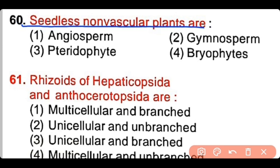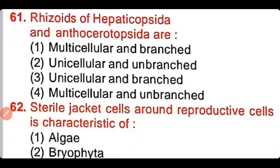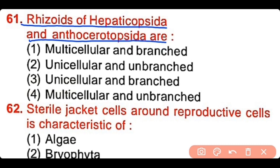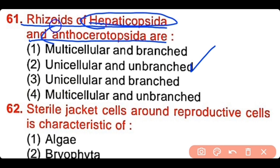Question number 60: The seedless nonvascular plants are angiosperms, gymnosperms, pteridophytes, or bryophytes. The correct answer is option 4 — bryophytes are seedless as well as nonvascular plants. Question number 61: The rhizoids of Hepaticopsida and Anthocerotopsida are multicellular and branched, unicellular and unbranched, unicellular and branched, or multicellular and unbranched. The correct answer is option 2. The rhizoids of Hepaticopsida as well as Anthocerotopsida are unicellular and unbranched.